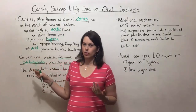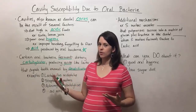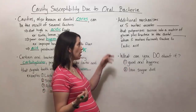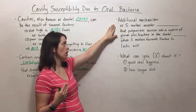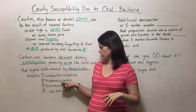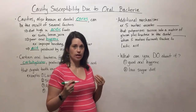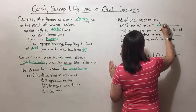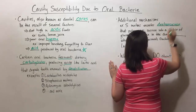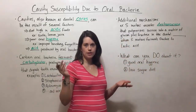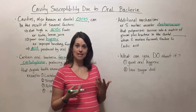Acid production is the major cause of enamel breakdown, but it's not the only mechanism possible. Sometimes bacteria have additional mechanisms that contribute to this process. For example, Streptococcus mutans excretes something called dextransucrase. Even if you've never heard of it, you should be able to tell what it is — it ends in '-ase,' which generally means it's an enzyme.